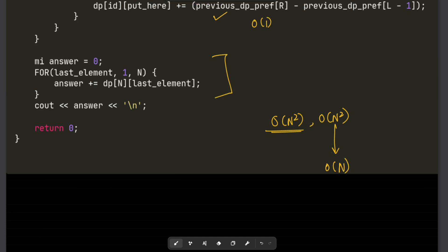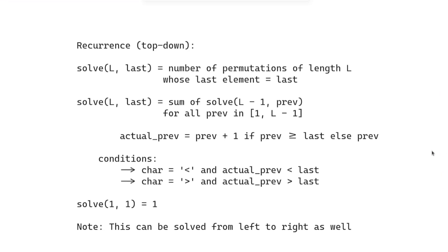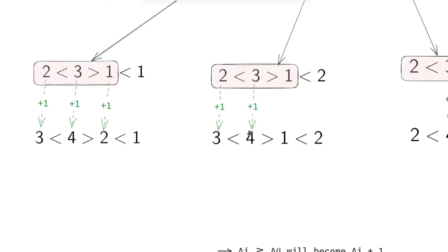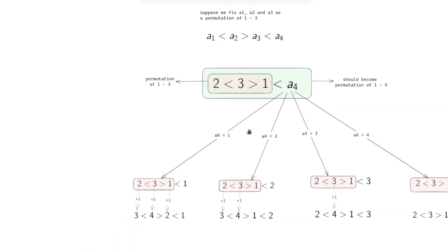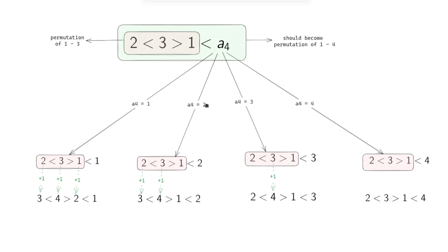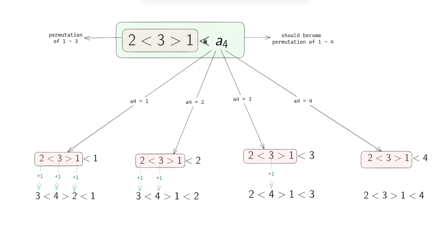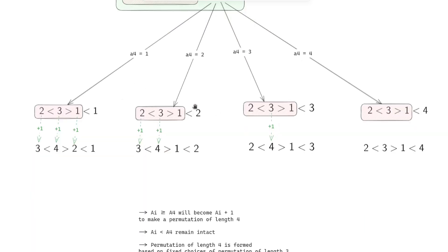To summarize: to extend a permutation of length l to l+1, fix the last element and the previous last element and use prefix sums to transition efficiently. Compute the answer for permutation of length 1, extend to length 2, and so on up to length n. That's it for this video - if you found this useful, do like and share, and let me know any doubts or suggestions in the comments.